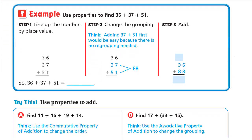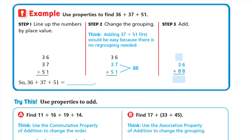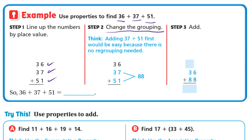On the next page: use properties to find 36 plus 37 plus 51. Step one: line up by place value — 36, then 37, then 51. Step two: change the grouping. Instead of adding 36 plus 37 first, try adding 37 plus 51 first. Why? Because 6 plus 7 is 13 and you'd have to regroup.